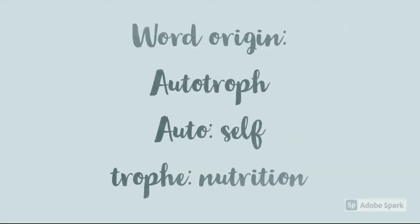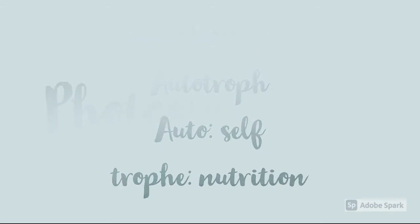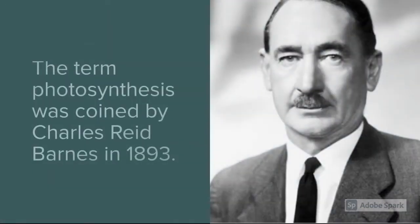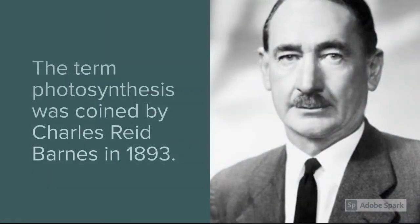The origin of the word autotrophs is: auto means self and troph means nutrition. The term photosynthesis was coined by Charles Reed Barnes in 1893.